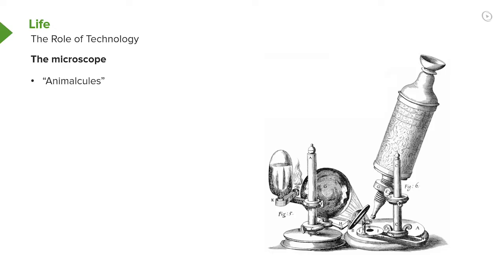The discoveries of life and the molecular nature of life have been totally dependent upon technology. The first technological advance that had importance in helping us understand cells was the invention of the microscope. Anton van Leeuwenhoek in the 1650s invented the very first microscope and was the first person ever to see single-celled organisms — organisms that he called animalcules. He was very intrigued by these cells.